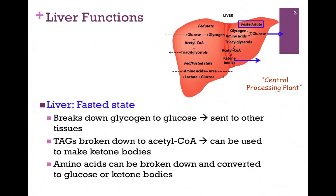In the fasted state — that is with no fuel coming in — the liver will first break down glycogen to glucose and send that to other tissues. It can also break down triacylglycerols to produce acetyl-CoA, and that can be used in ketogenesis to make ketone bodies. Other cells can use this, but more importantly, the brain. Amino acids can also be broken down and converted to either glucose or ketone bodies by the liver and sent to other cells that are in need of fuel.